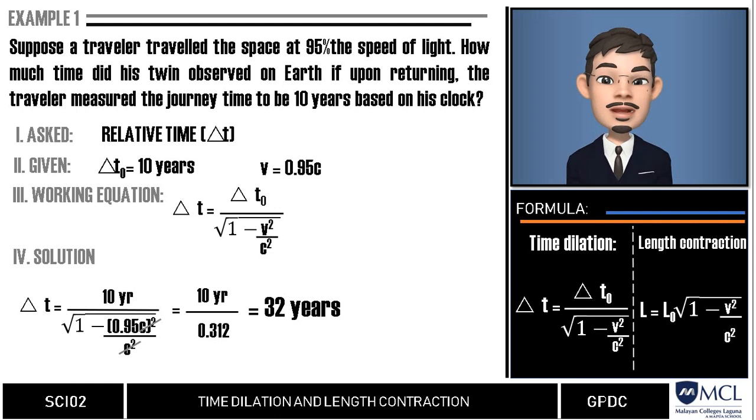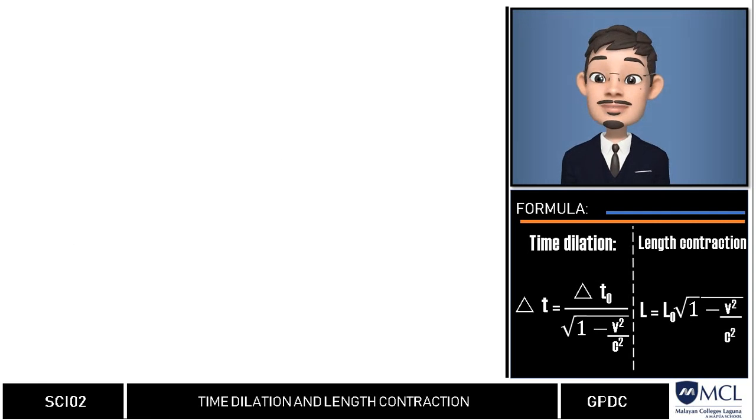This means that his twin brother on Earth has waited for him for 32 years, while the traveler in space counted only 10 years. Let us have another example.